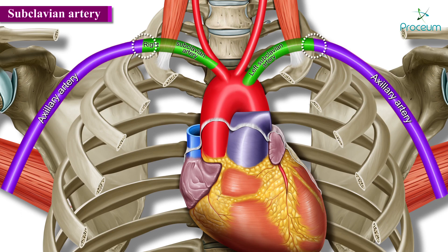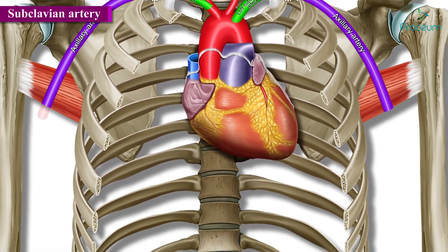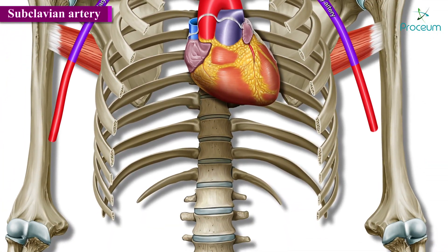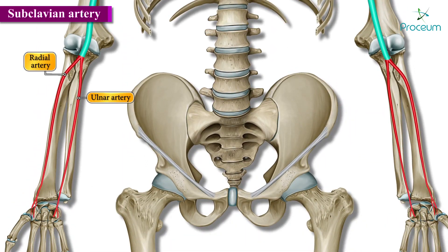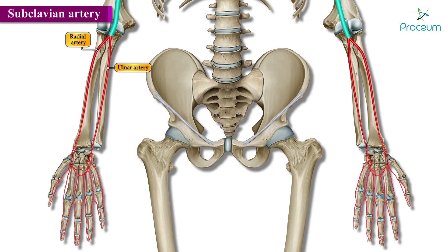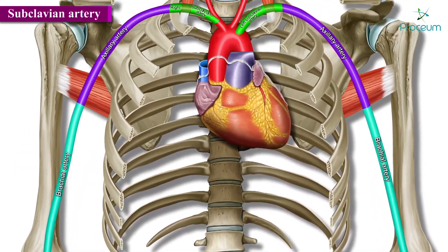The terminal portion of the subclavian artery, known as the axillary artery, supplies the axillary region. The axillary artery in turn forms the brachial artery at the lower border of the teres major muscle. The brachial artery then forms the radial and ulnar arteries, providing an extensive vascular supply to the arm and forearm.